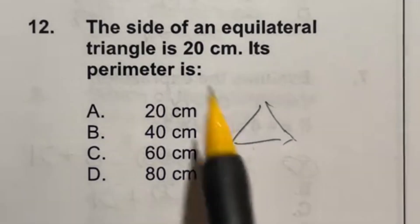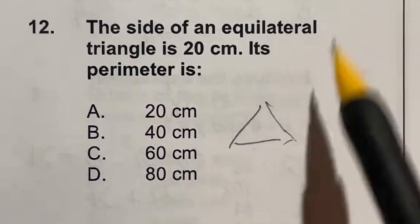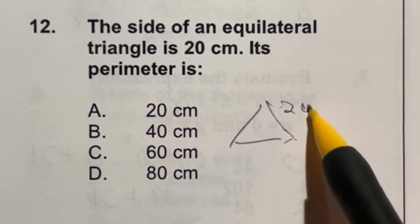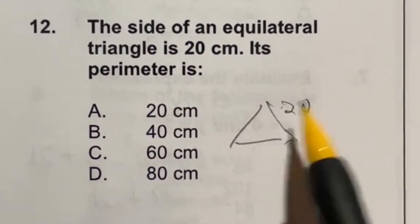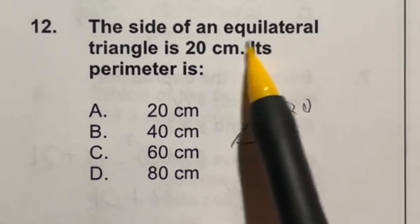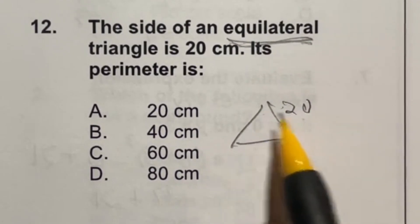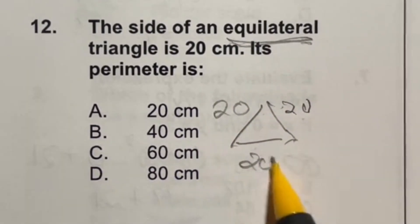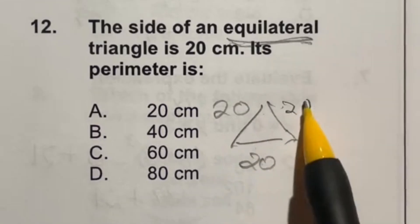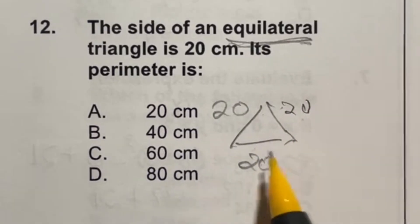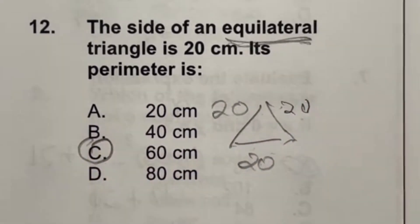So for number 12, it says that the side of an equilateral triangle is 20 centimeters. It then says, what's the perimeter? Well, the perimeter is when you add all the sides up. And if it's equilateral, that means that all three of the sides are the same length. So this is 20, this is 20, and this is 20. So really, we're just adding these three 20s together, or multiplying by three, which is going to give us a final answer of C, 60 centimeters.